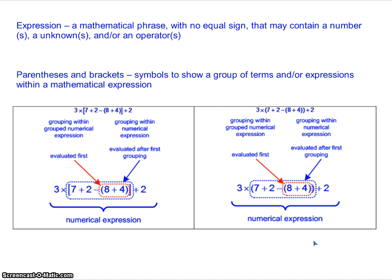We talked about parentheses and brackets. Parentheses and brackets are symbols to show a group of terms and or expressions within a mathematical expression. Basically, you're taking a long expression, like the example here, and you're breaking parts of it into a smaller section, into their own individual expressions. With the parentheses in this example, you're grouping the 8 plus 4 together, so that's becoming its own expression.